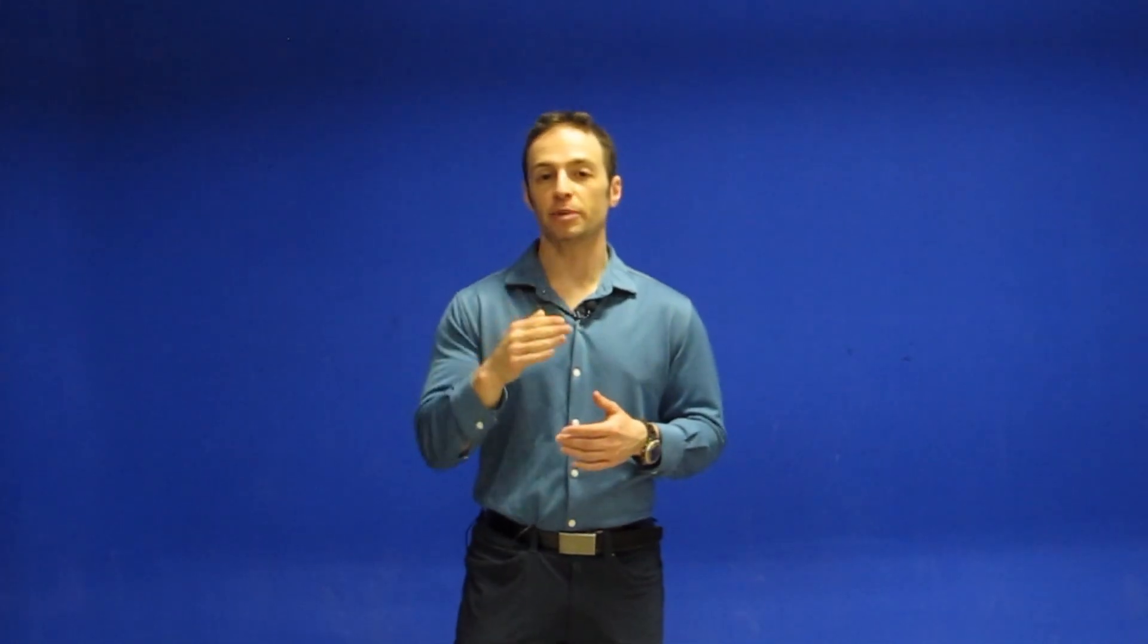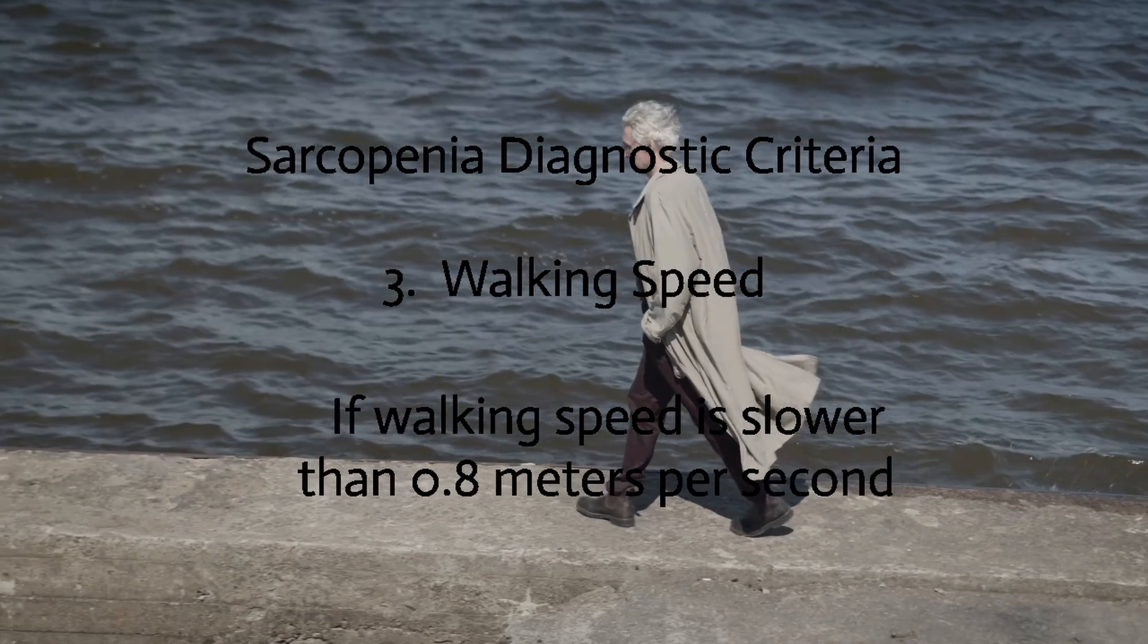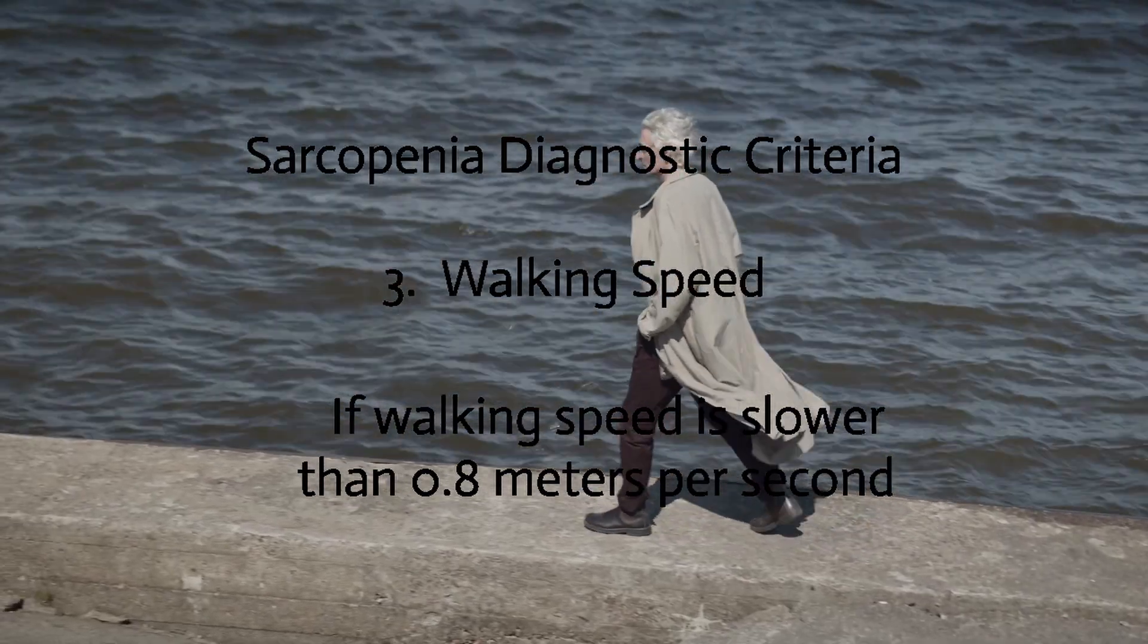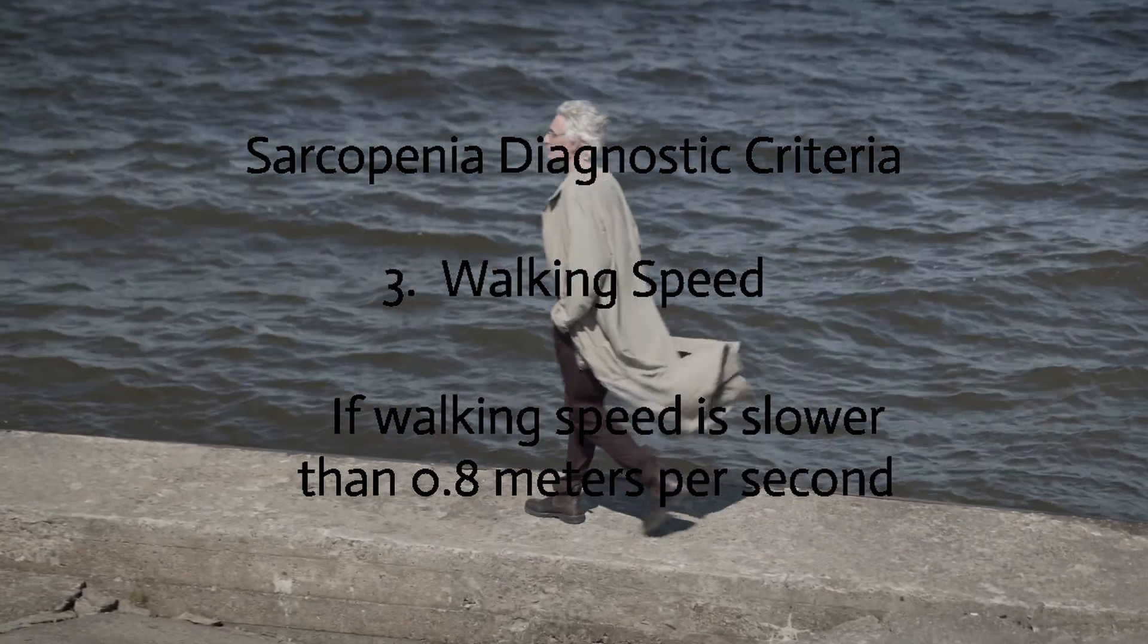Criteria number two is loss of muscle strength, which is not the same as mass. For men, it's a grip strength of less than 26 kg. For women, a grip strength of less than 16 kg. And the third diagnostic criteria is based on performance or function, walking speed. If the walking speed is slower than 0.8 meters per second, that's also sarcopenia. Somebody needs to have two of those three criteria to qualify as having sarcopenia.